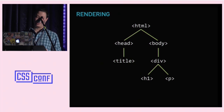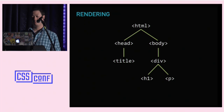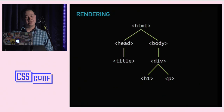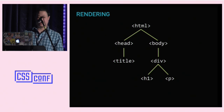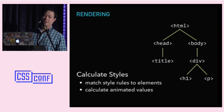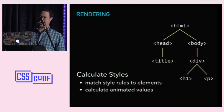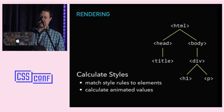From here, your browser transitions into the rendering stage. Your browser will use the DOM tree as a basis to create another tree called the render tree — or if you're Firefox, the frame tree, but they're the same thing. The render tree cares specifically about the visual aspects of elements that will ultimately be displayed on the web page. To craft it, your browser needs to calculate styles, determine which style rules affect which elements, and if you have animations in progress, calculate the values for any animated properties at that moment in time.